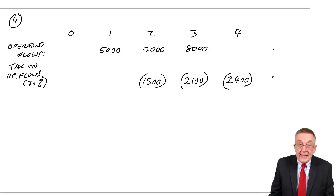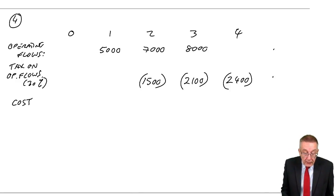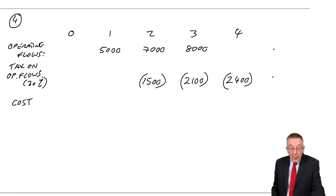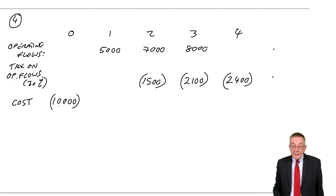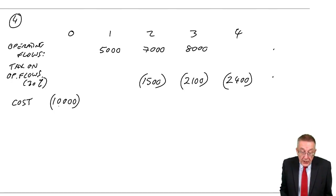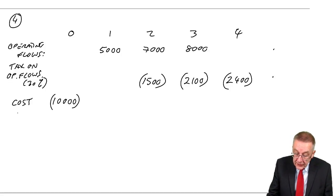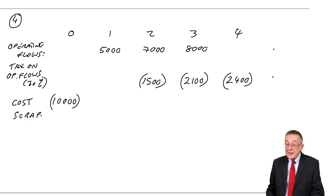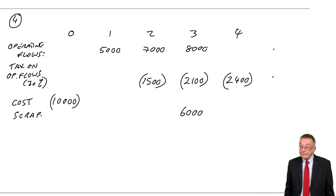Next, look at the capital flows: the initial cost of the machine and its sale proceeds. The machine costs 10,000 at time zero — an outflow. And at the end of year three we attempt to sell it for 6,000 — an inflow of 6,000 at time three. Again, easy half marks or one mark.